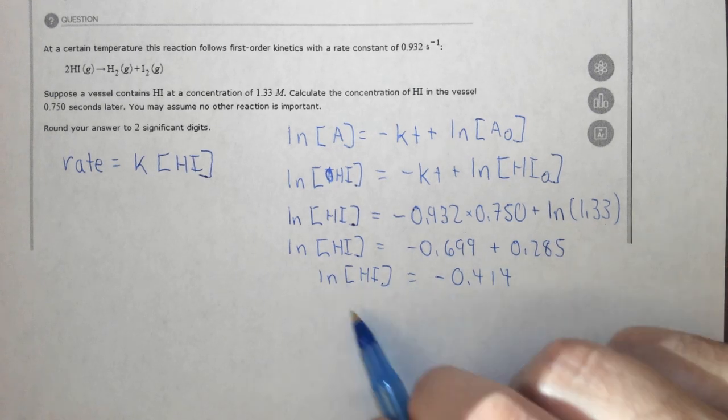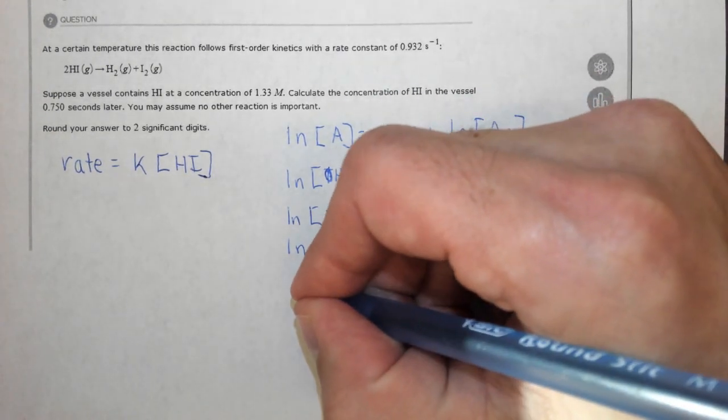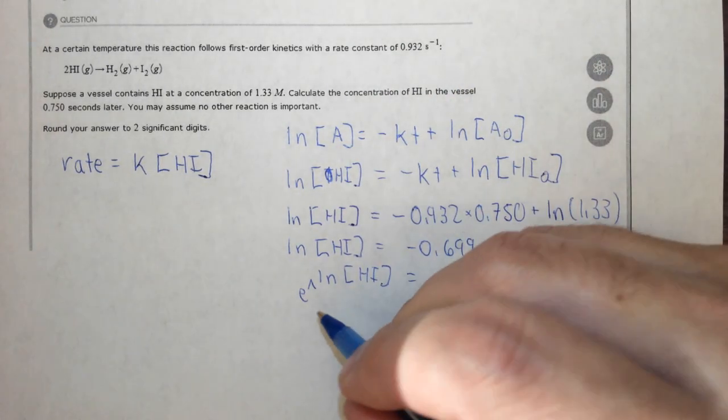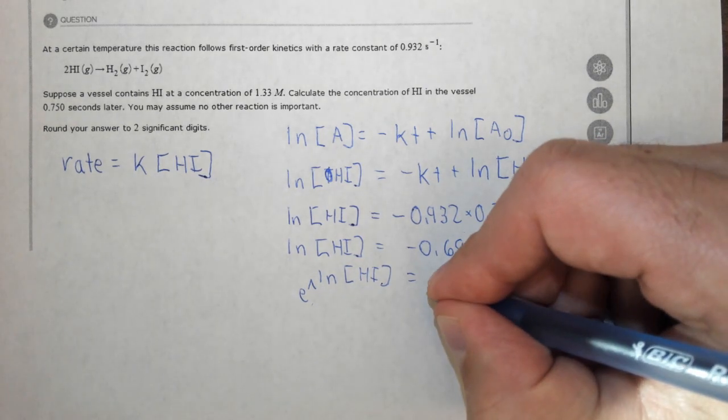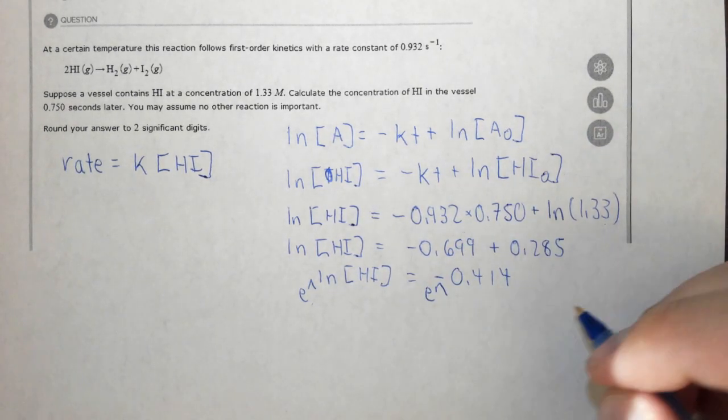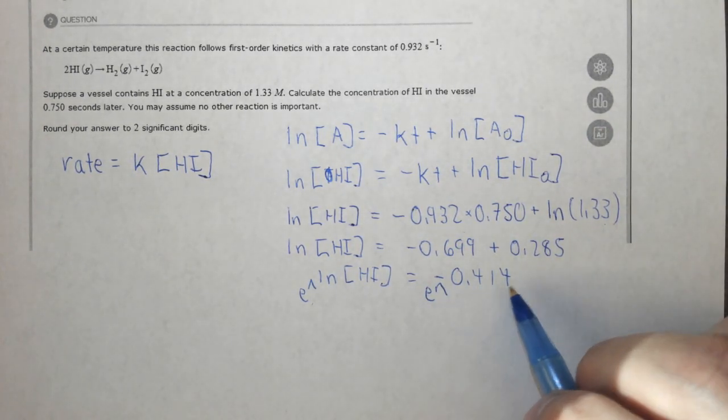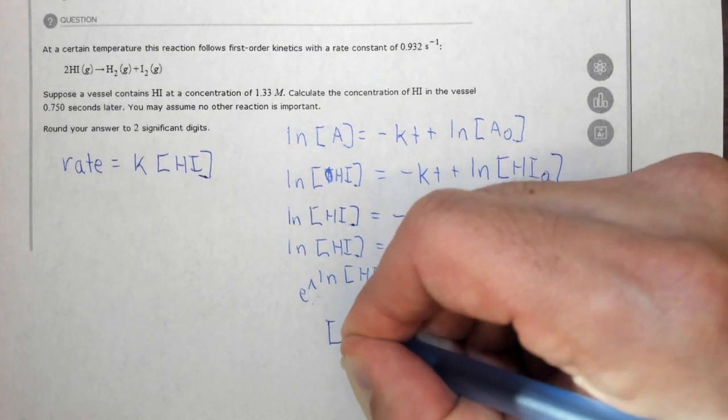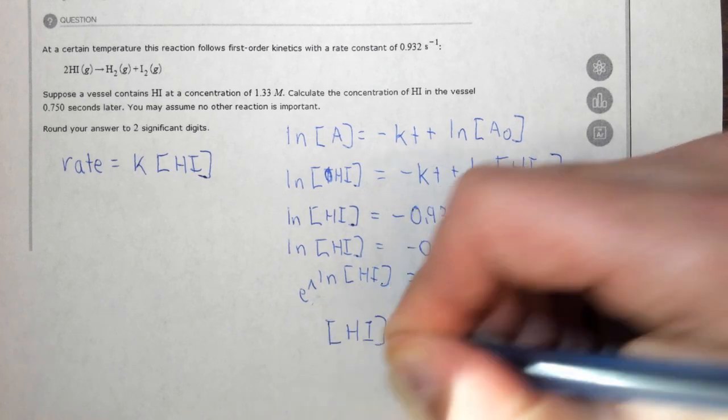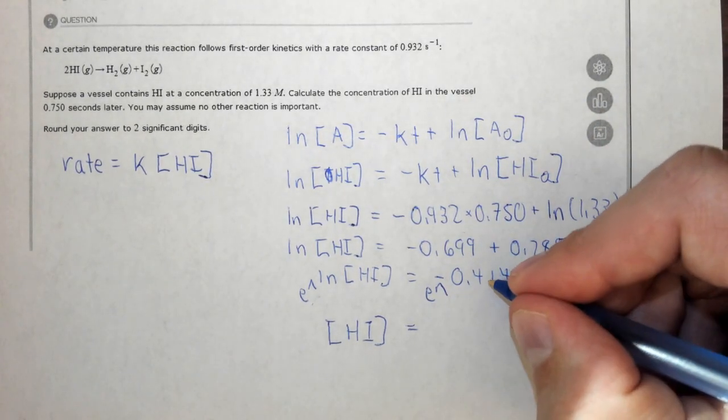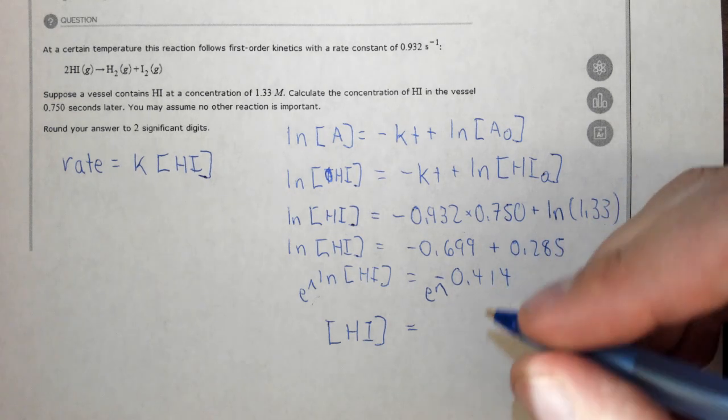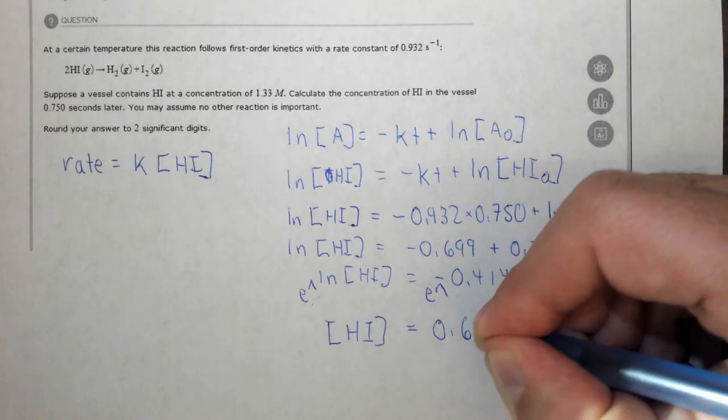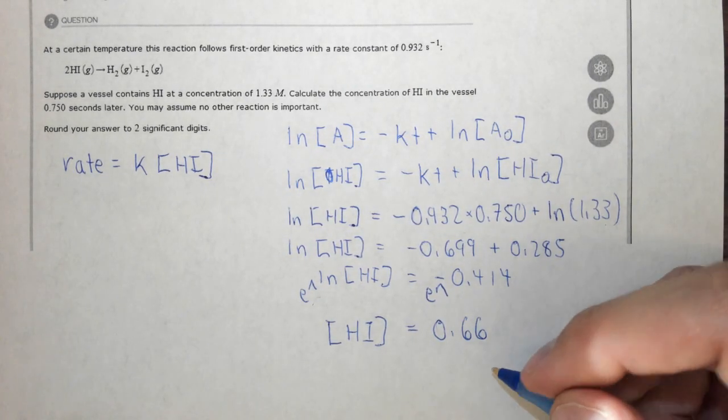Now to get rid of this, we have to use the second or shift key on most calculators. We need to take e to the ln of concentration of HI, and then we have to take e to the other side, so e to the -0.414. E to the ln just leaves us with the concentration of HI, and e to the -0.414 is equal to 0.66 to two significant figures.